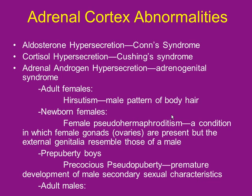Cortisol hypersecretion — this disease is called Cushing's syndrome. It used to also be called pseudodiabetes or adrenal cortical diabetes because it makes blood sugars spike and causes sugary urine. It looks a lot like diabetes — but there's nothing wrong with their insulin. It's all about cortisol, not insulin.